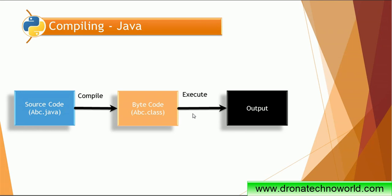So let's understand the interpreter and compile concepts. If you know the Java language, Java works in the compiling format. We write code in Java — for example, abc.java — then we have the Java compiler which compiles this code and converts the .java file into a .class file. This .class file is also called a bytecode file because the Java source code is converted into bytecode. Bytecode is nothing but machine-understandable code, like 0 and 1. So the machine understands bytecode and not the actual source code, hence we need to convert the Java code into bytecode using the compiler.